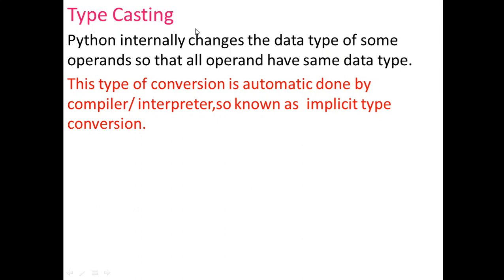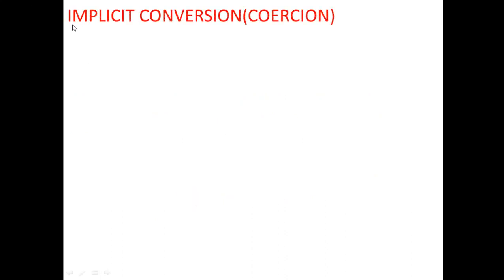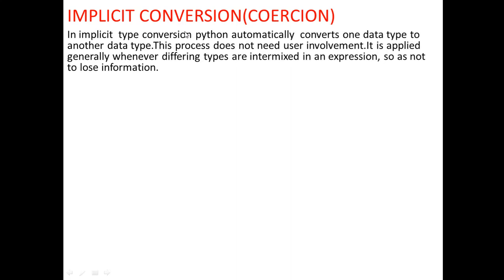When there are intermixed expressions, Python automatically changes one data type to another, and this automatic conversion is done by the compiler or interpreter — it is known as implicit conversion. Python also supports explicit type conversion, which is known as type casting. We will look at implicit conversion with an example first, then move on to explicit conversion.